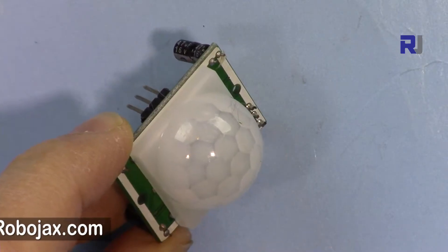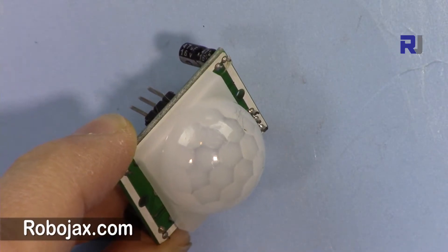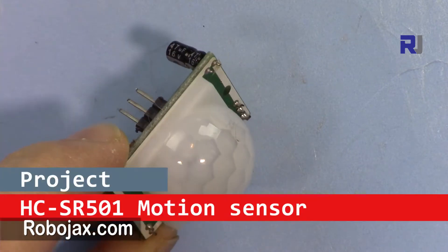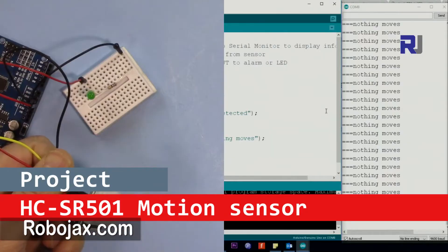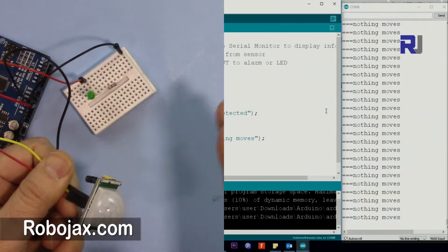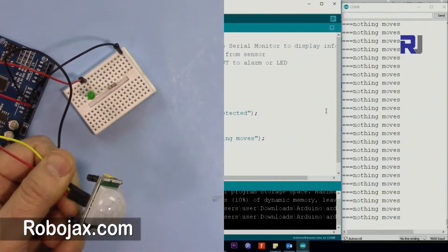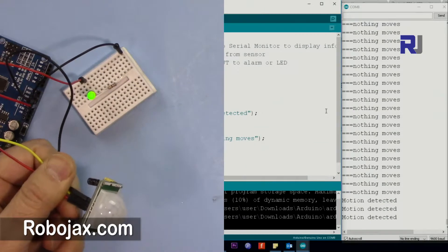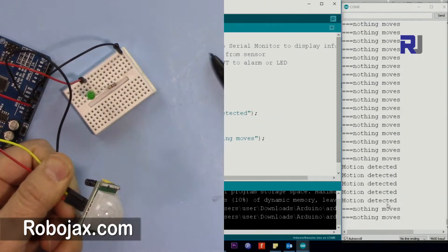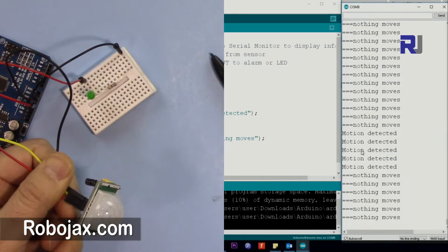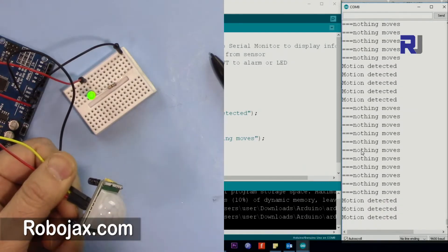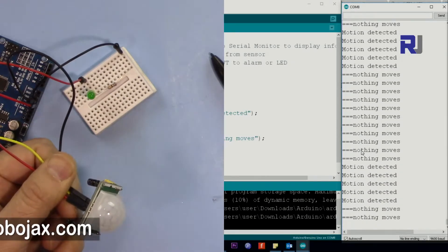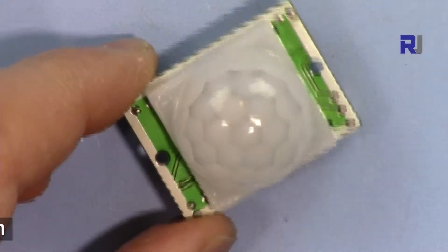HCSR501 motion sensor. Hi, welcome to Robojax. In this video I'm going to introduce this HCSR501 motion sensor to detect motions either on LED that shows, or on the screen that shows it is detected, or based on that you can do some action to control something or a robotic car or arm. This is the module.